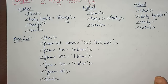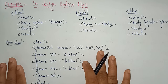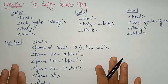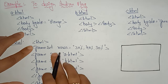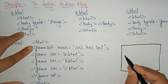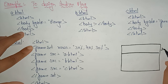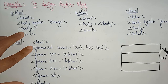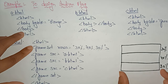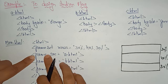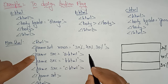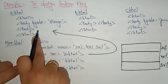Let me demonstrate by designing an Indian flag using the frameset. I'm dividing the page using rows: 30%, 40%, and the remaining 30% — making a complete 100% web page divided into three frames. For the first frame, source is a.html — a page I already created.